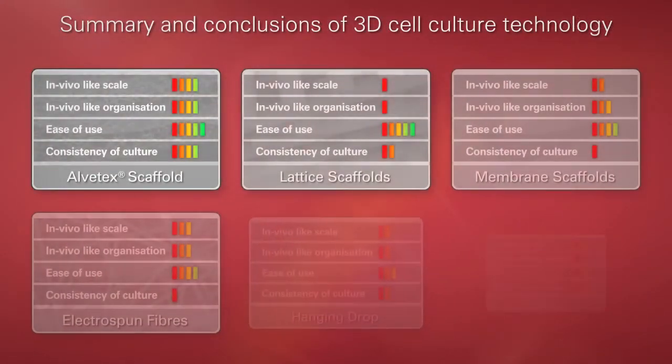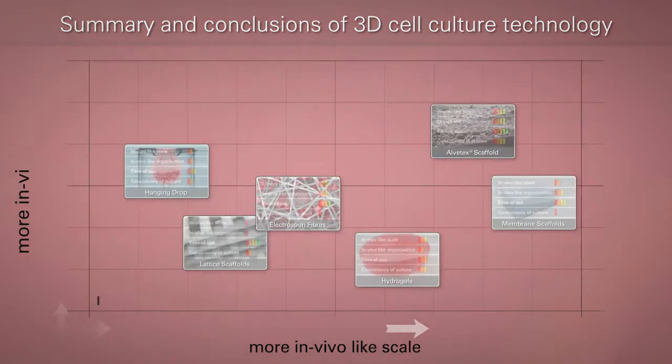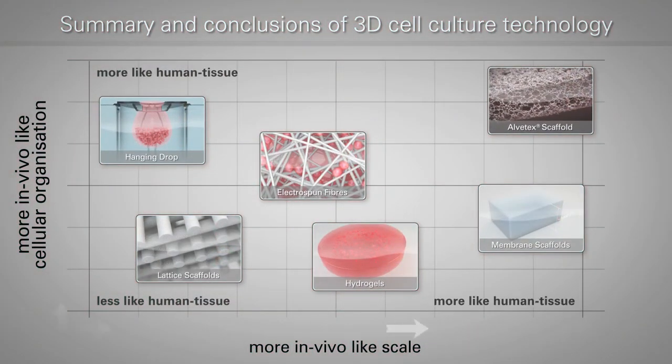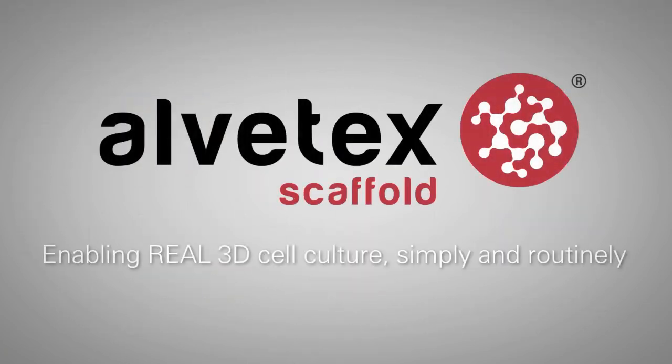If we position each in vitro technology against the human tissue benchmarks of organization and scale, Alvatec Scaffold is the technology closest to reproducing the in vivo tissue environment. Alvatec Scaffold: enabling real 3D cell culture simply and routinely.